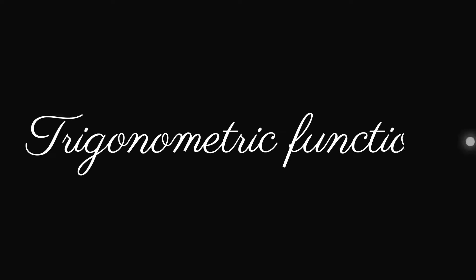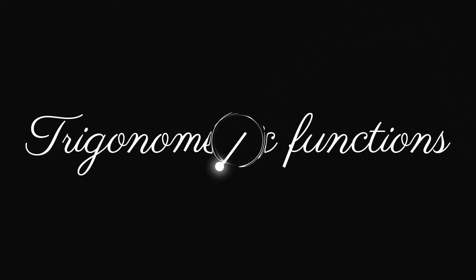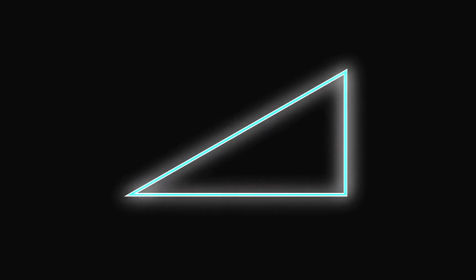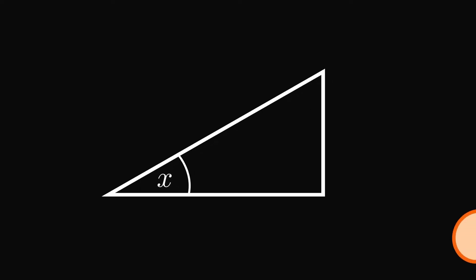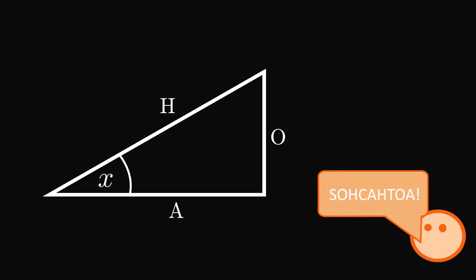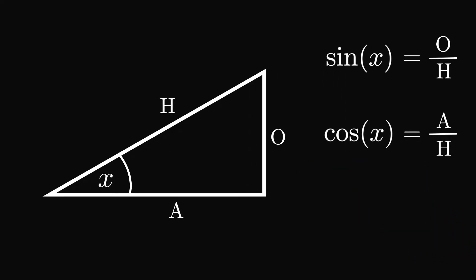Trigonometric functions are some of the most fundamental functions in mathematics and begin with a simple right angle triangle. They relate the sides of the triangle to an angle within the triangle other than the right angle, and this gives rise to the famous functions sine, cosine, and tangent.